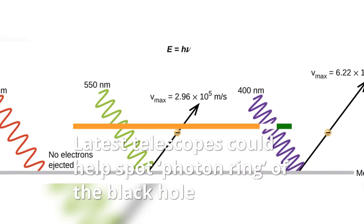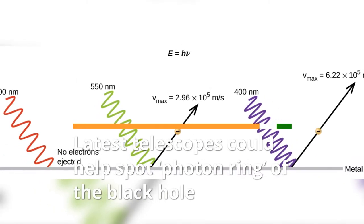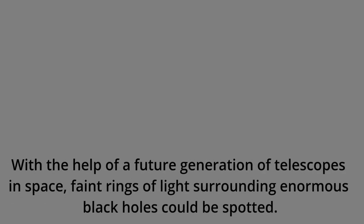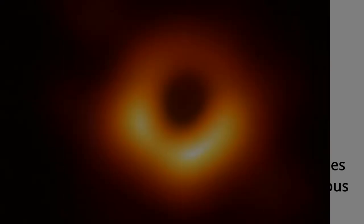Latest Telescopes Could Help Spot Photon Ring of the Black Hole. With the help of a future generation of telescopes in space, faint rings of light surrounding enormous black holes could be spotted.